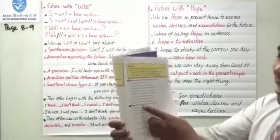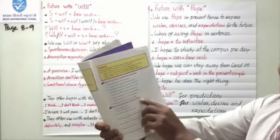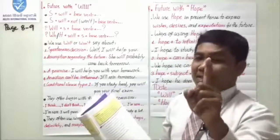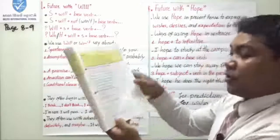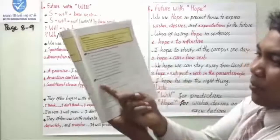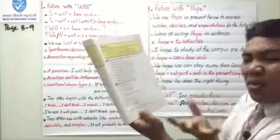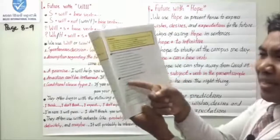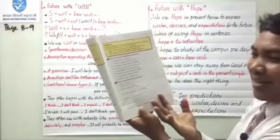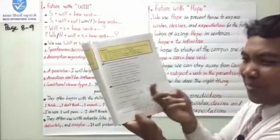Last but not least, exercise four: rewrite the sentences using only the word 'hope.' For example, number one: 'I don't want it to rain' — rewrite it as 'I hope it doesn't rain.' You rewrite using a hope sentence structure. You understand what you are going to do for this exercise.